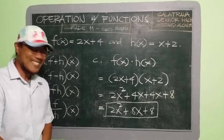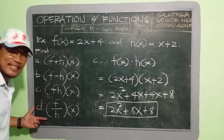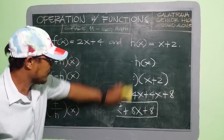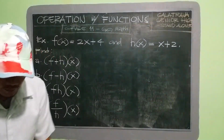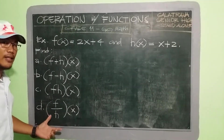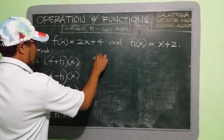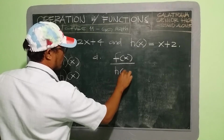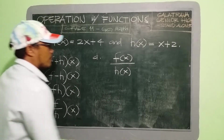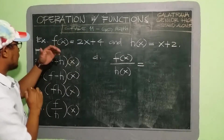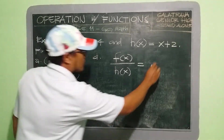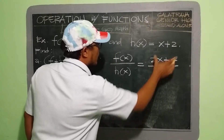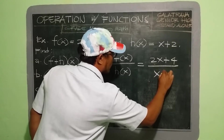Did you get it? Next, we have letter D — the quotient. That is simply f(x) divided by h(x), which is equivalent to: 2x + 4 divided by x + 2.